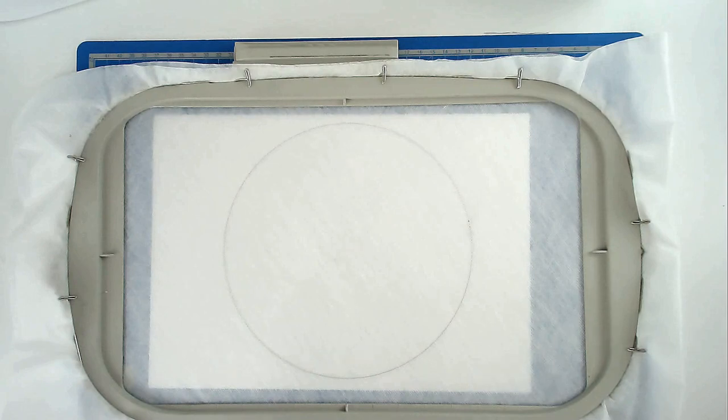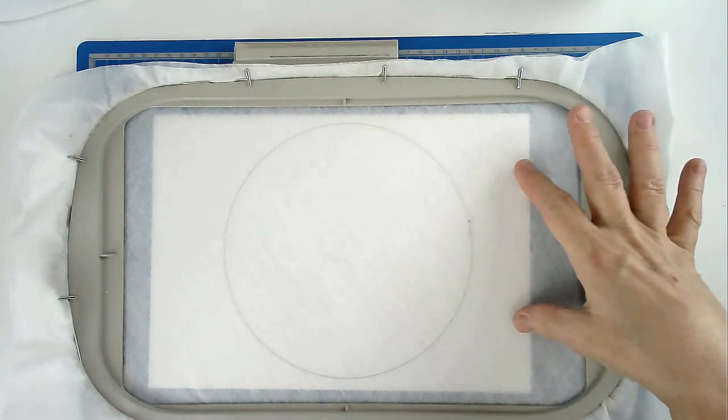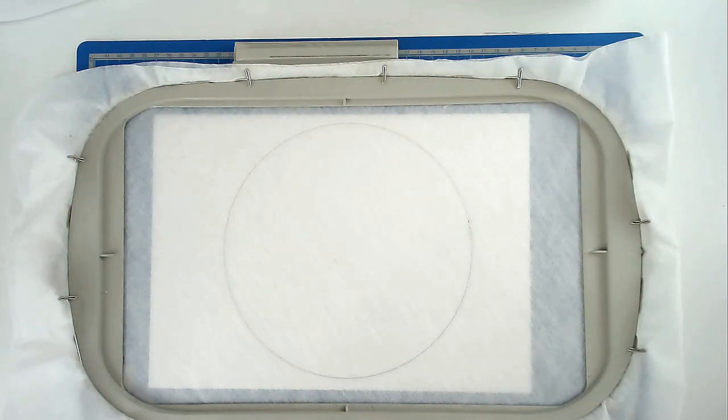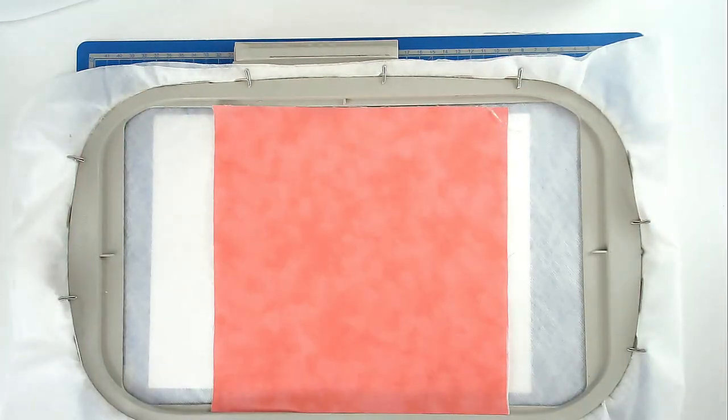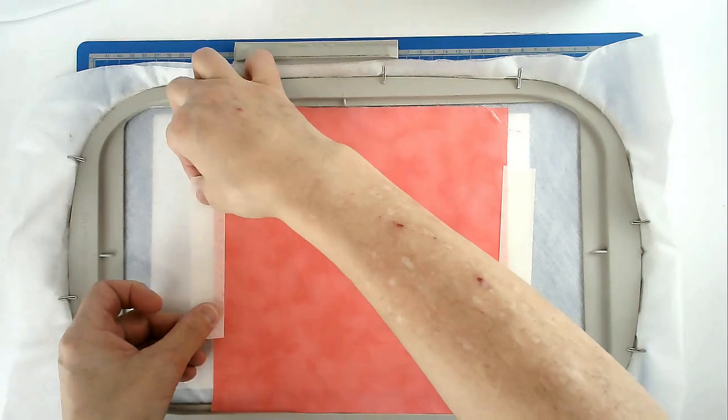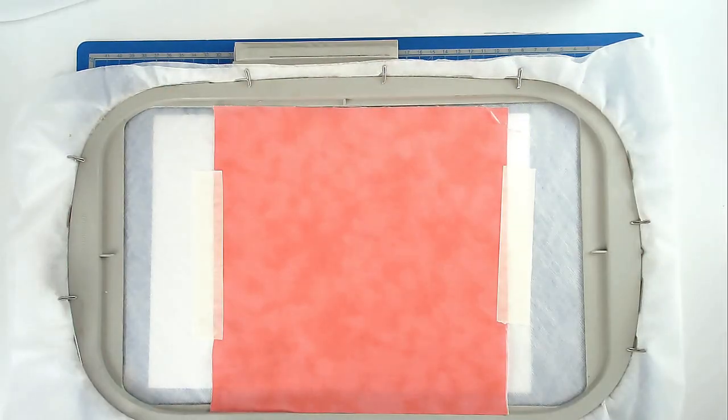Place your outside fabric over the circle. I've put a piece of paper underneath so you can see my outline, and tape it in place. Pop your hoop into your machine and stitch round number two to secure it, and it's also going to stitch the eyelets.